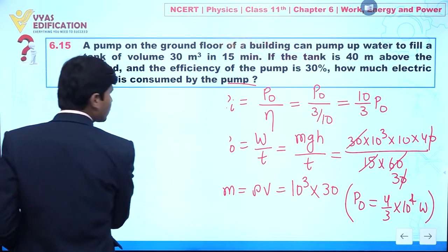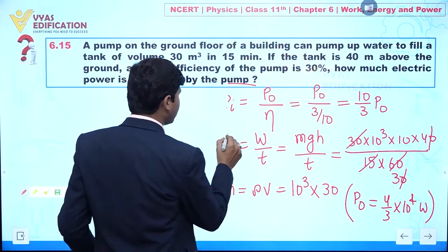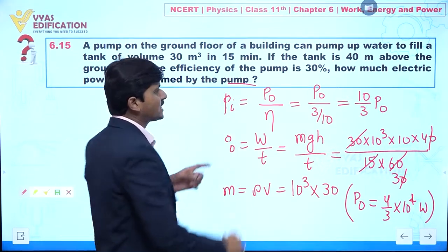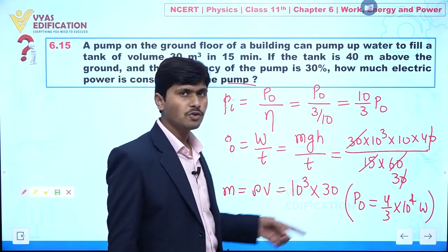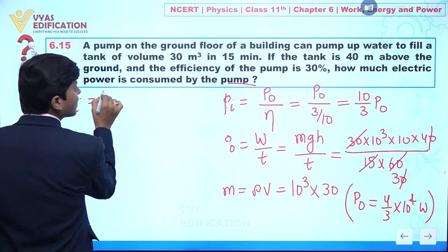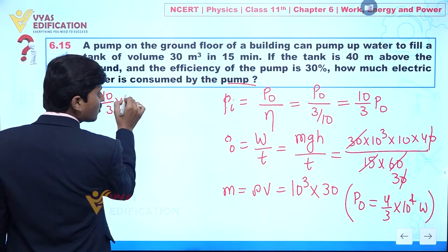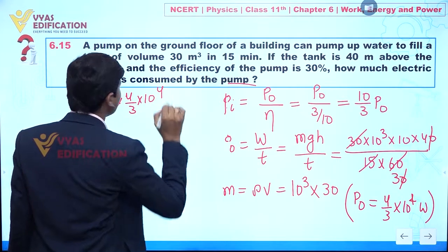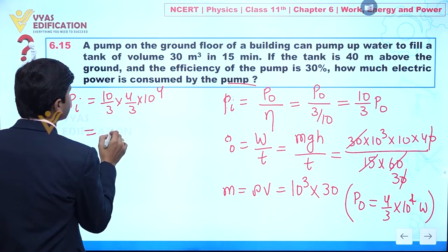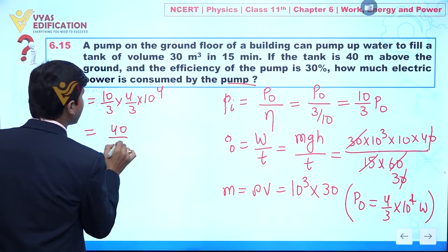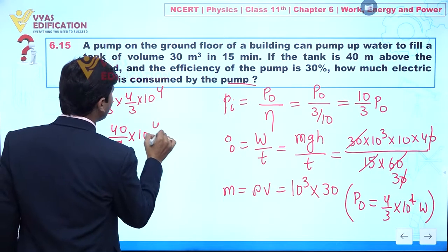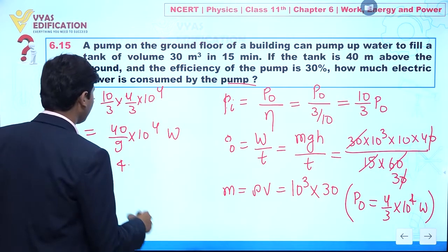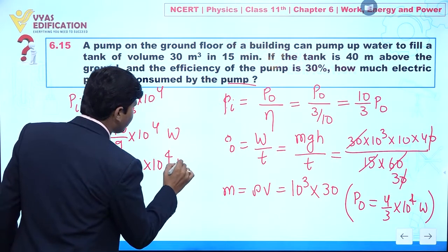Now we calculate input power. Input power = (10/3) × P_output = (10/3) × (4/3) × 10⁴ = (40/9) × 10⁴ watt, which is approximately 4.4 × 10⁴ watt. This is the electric input power consumed by the pump.